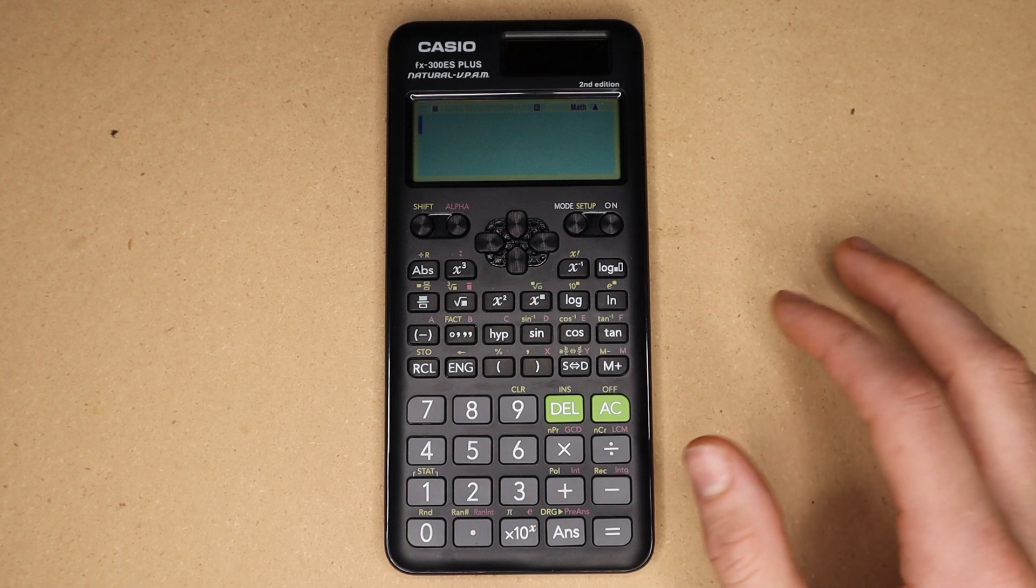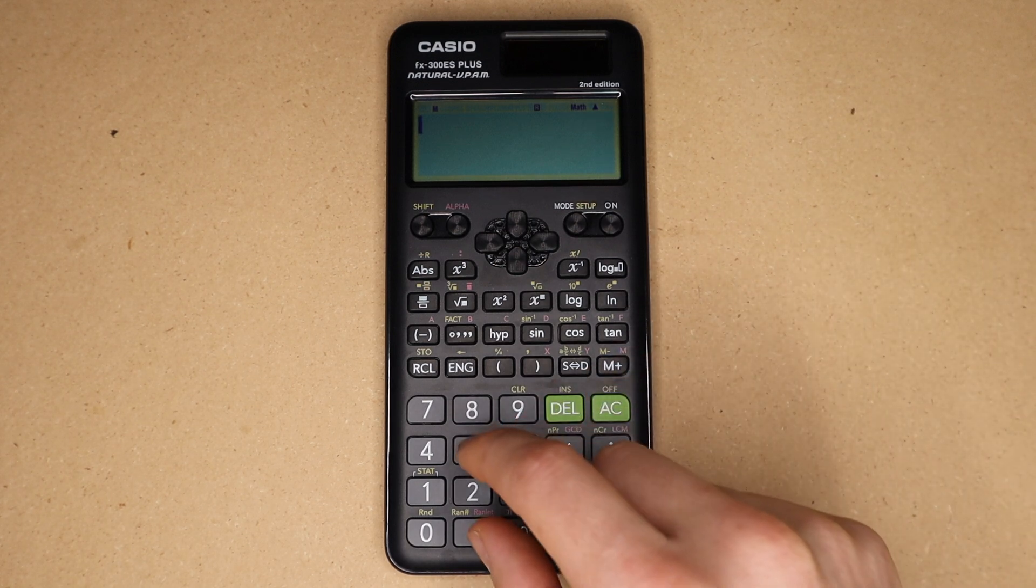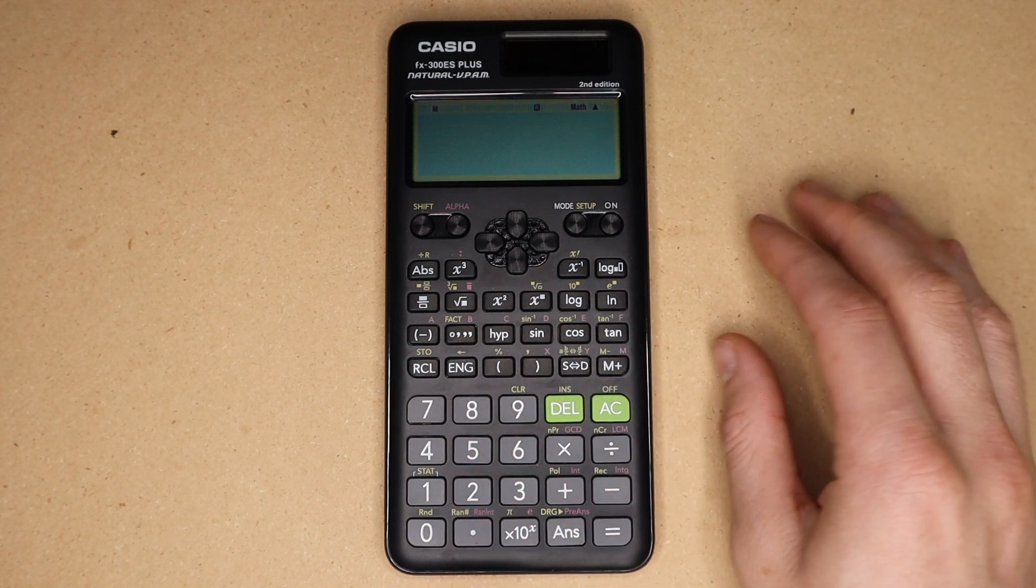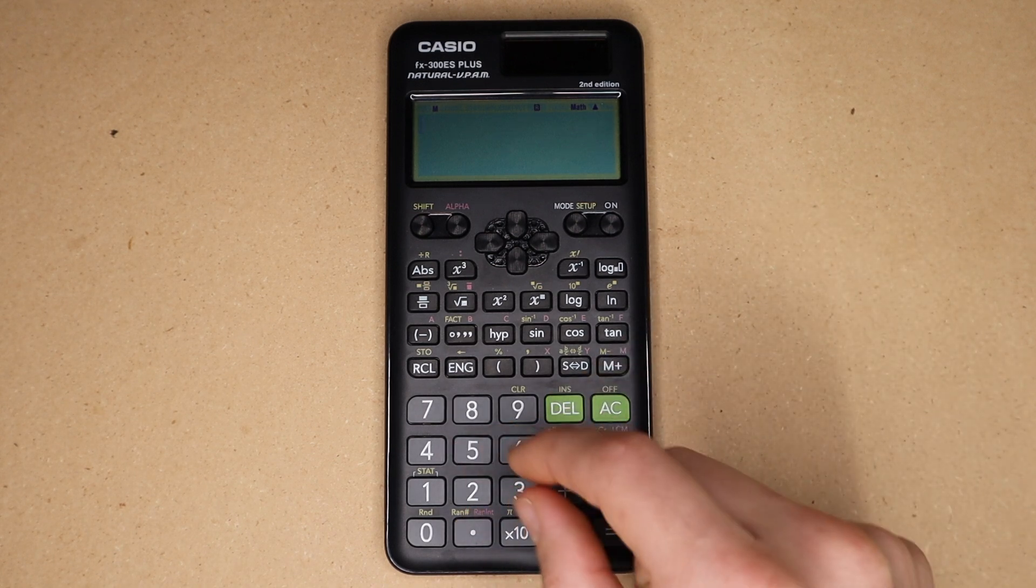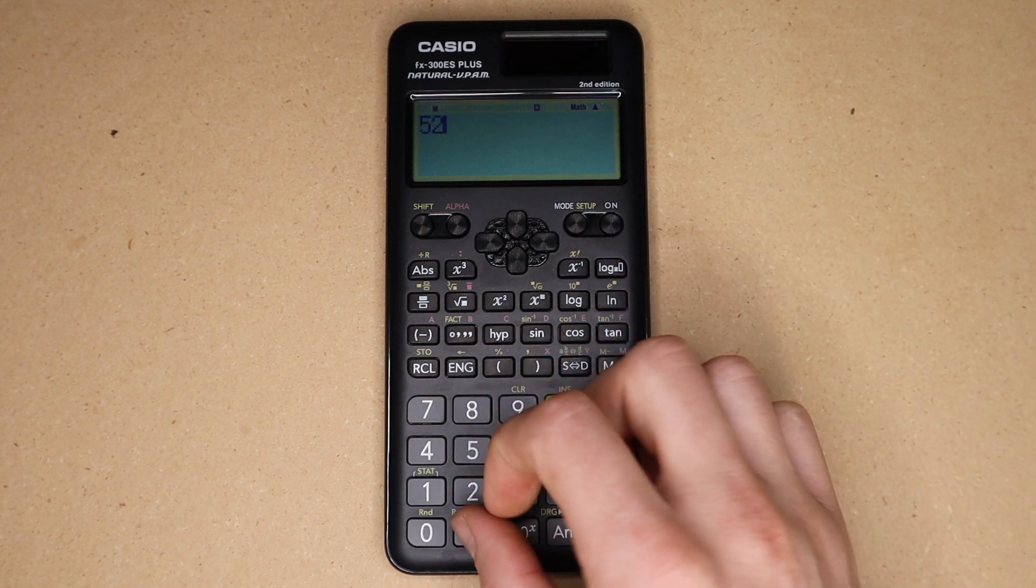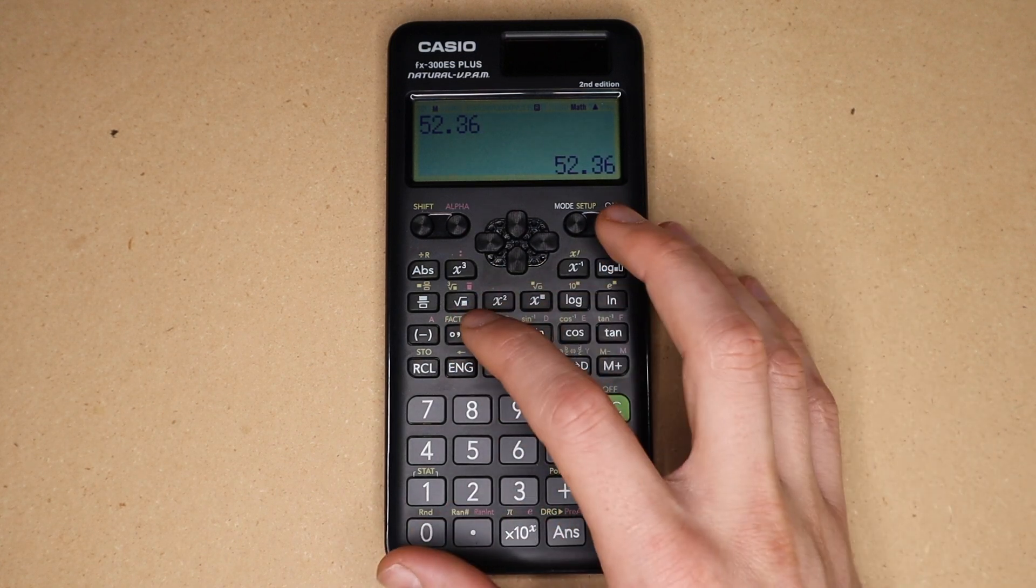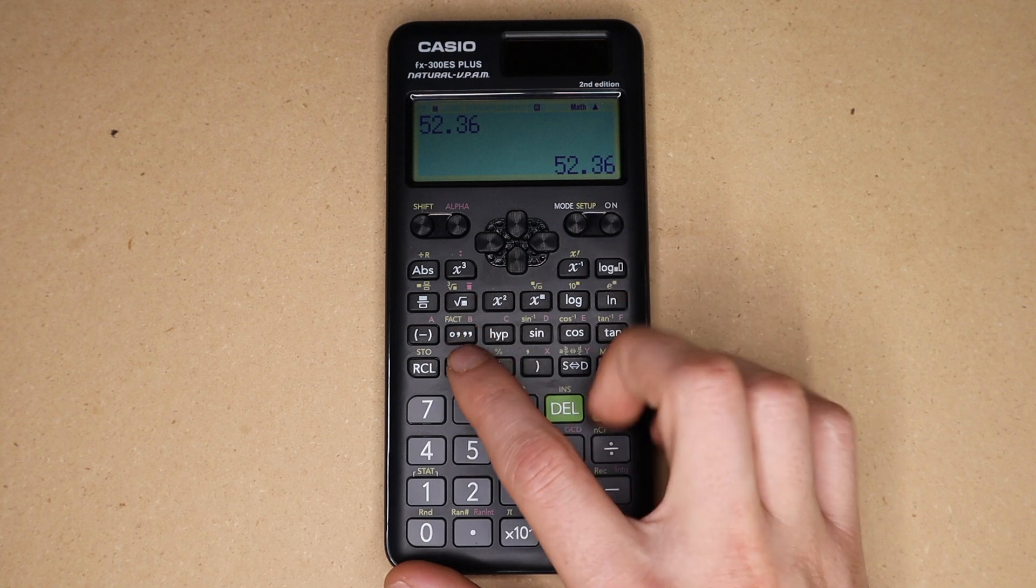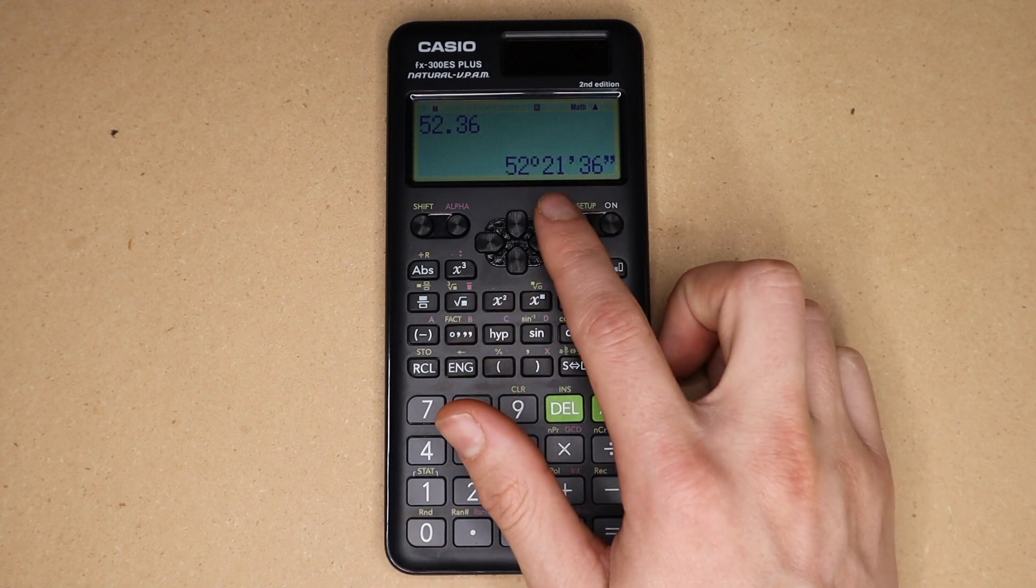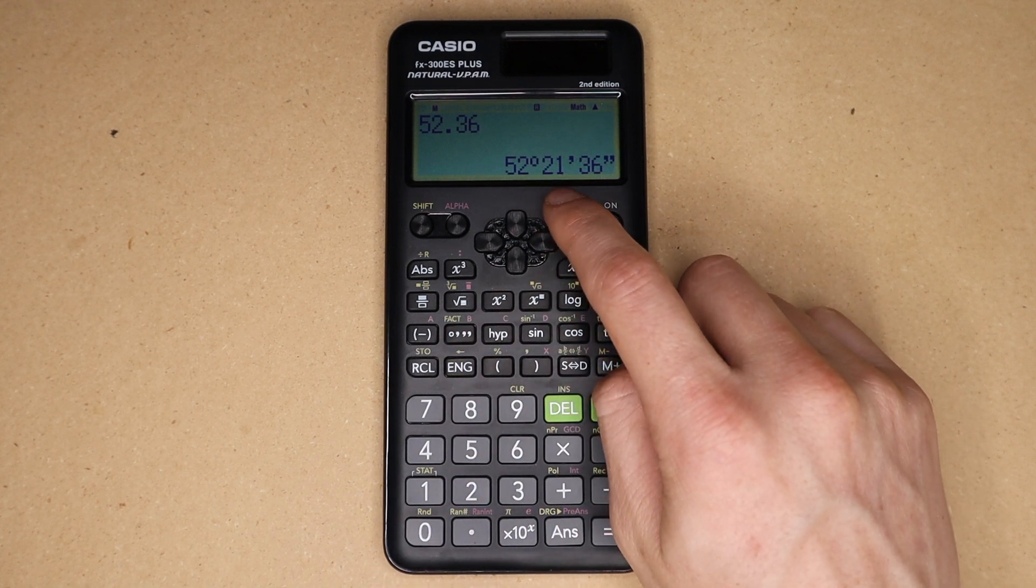And then also another random feature is the ability to convert degrees to degrees minutes seconds. So if I have for example fifty two point three six degrees and I want that in degrees minutes seconds, once you type it in you can just press this button right here and it will convert that to fifty two degrees twenty one minutes and thirty six seconds.